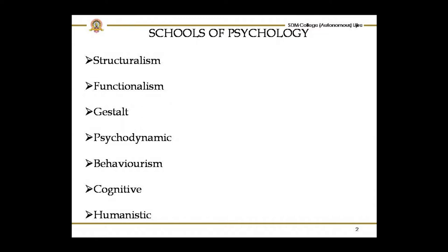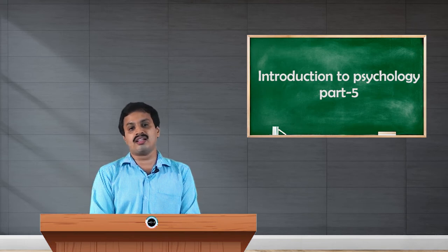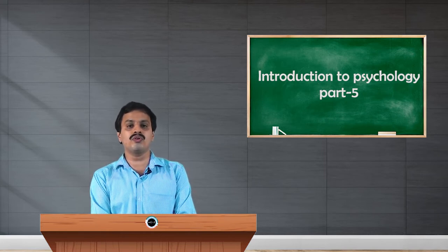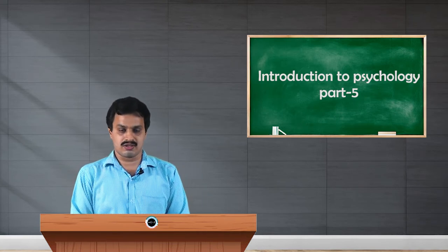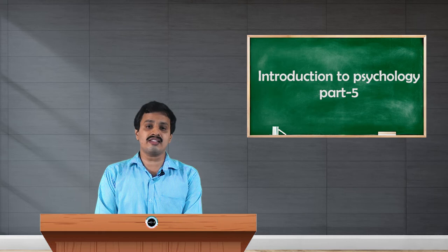This is about the humanistic school of psychology. Next, we are going to know about the research areas in psychology. Before going into research areas, let us see what research is. Research, or an investigation, means studying something at a deeper level — it is an in-depth study of any issue. In research areas, there are different areas of psychology, which we used to call branches of psychology.